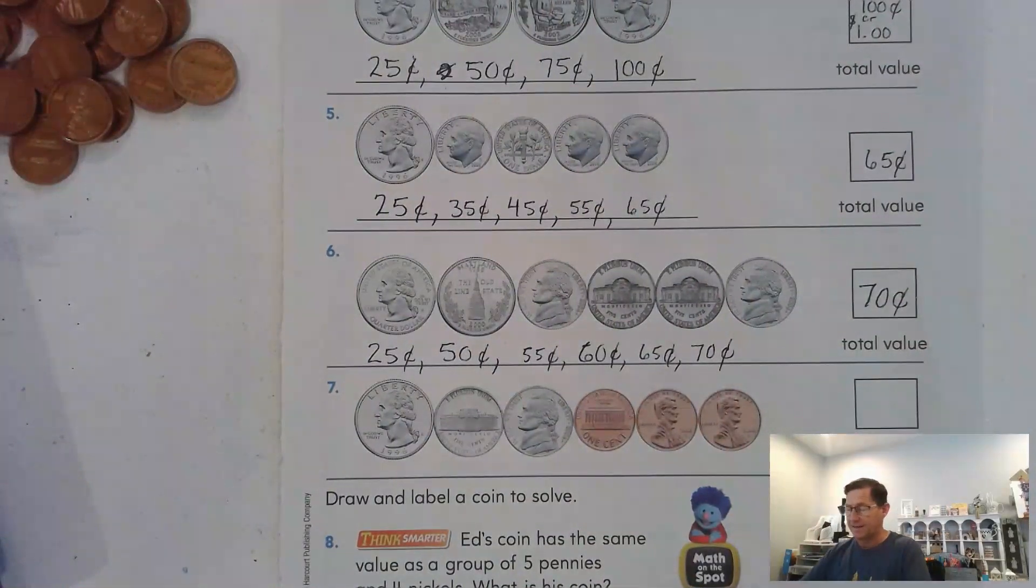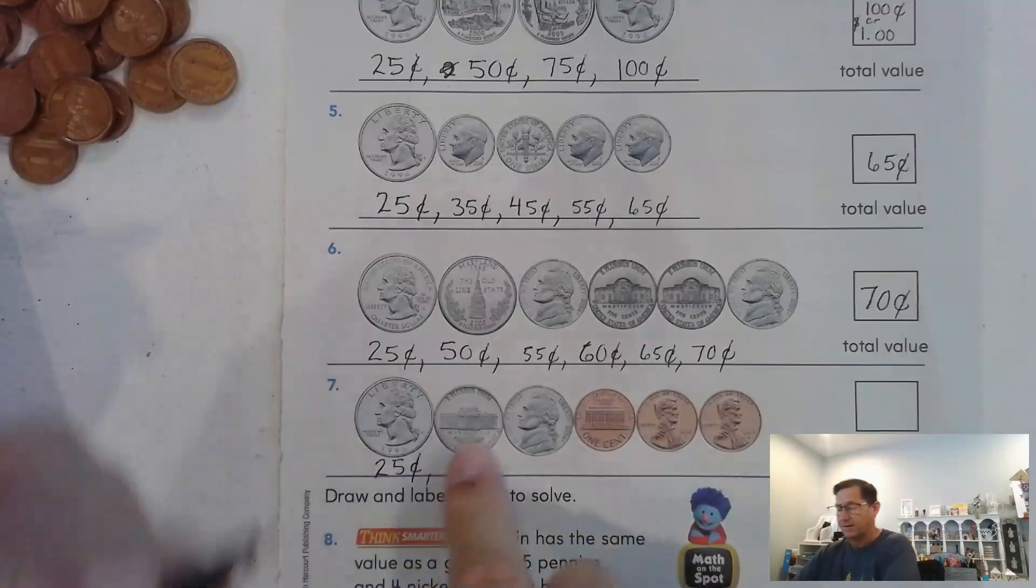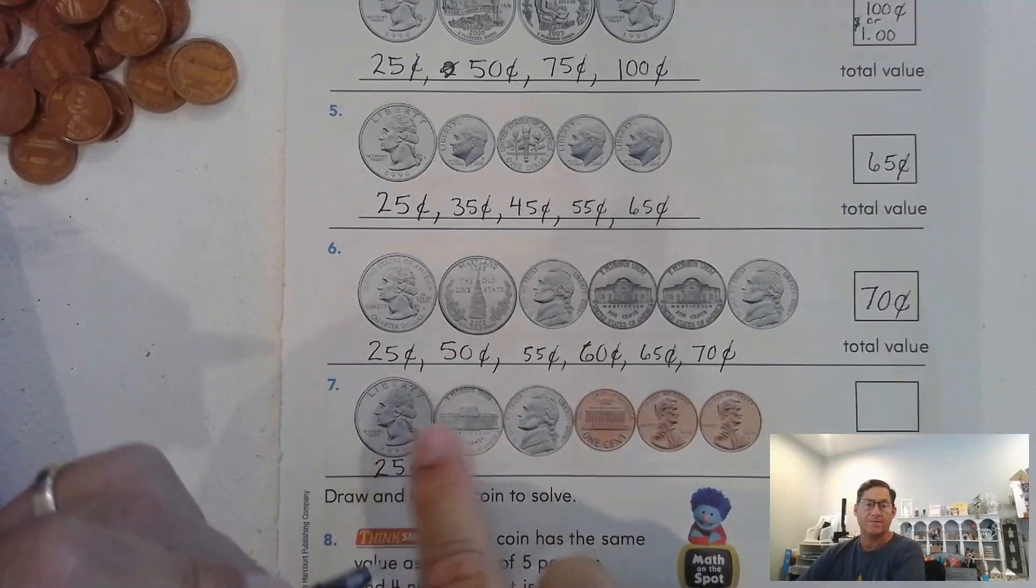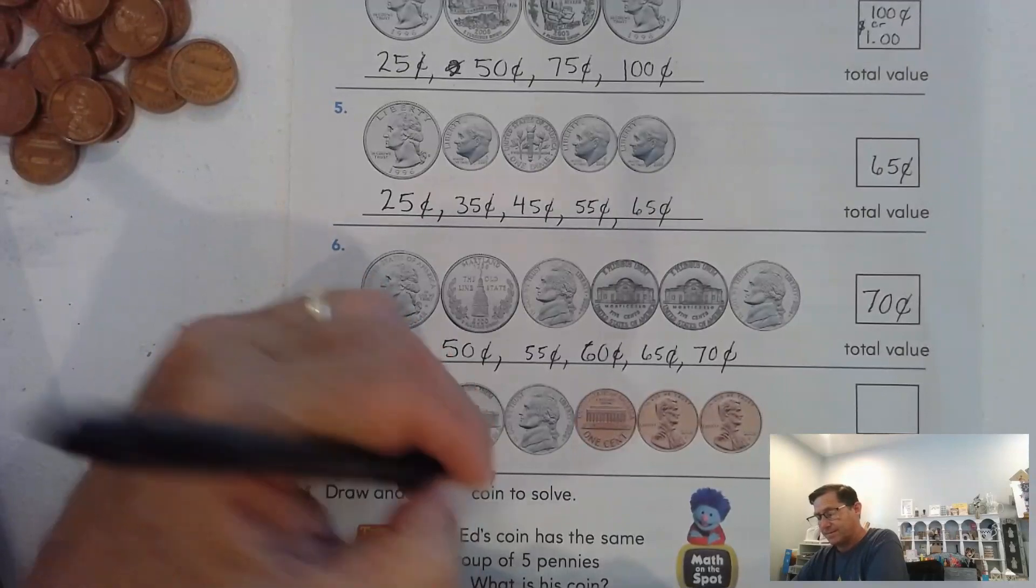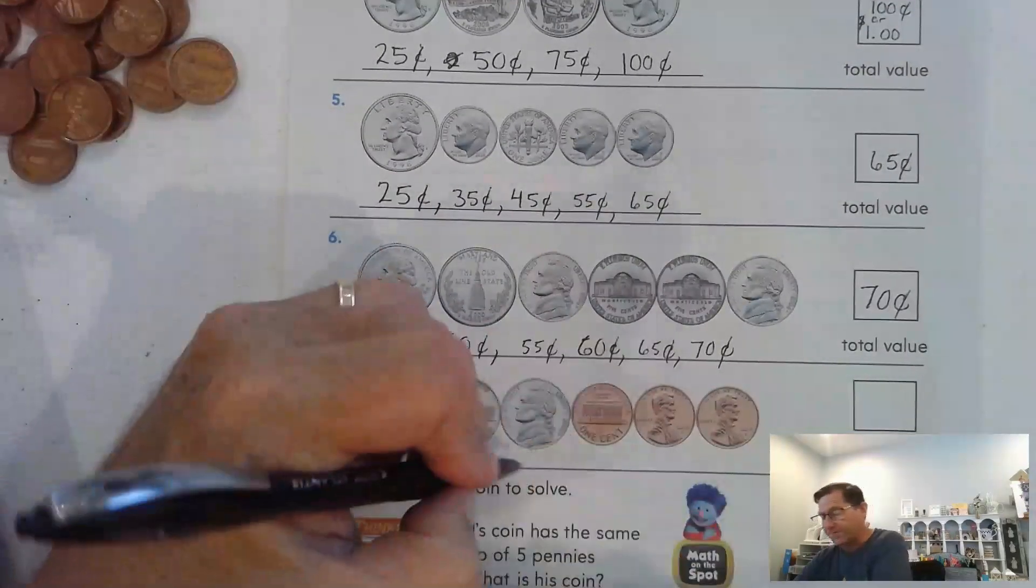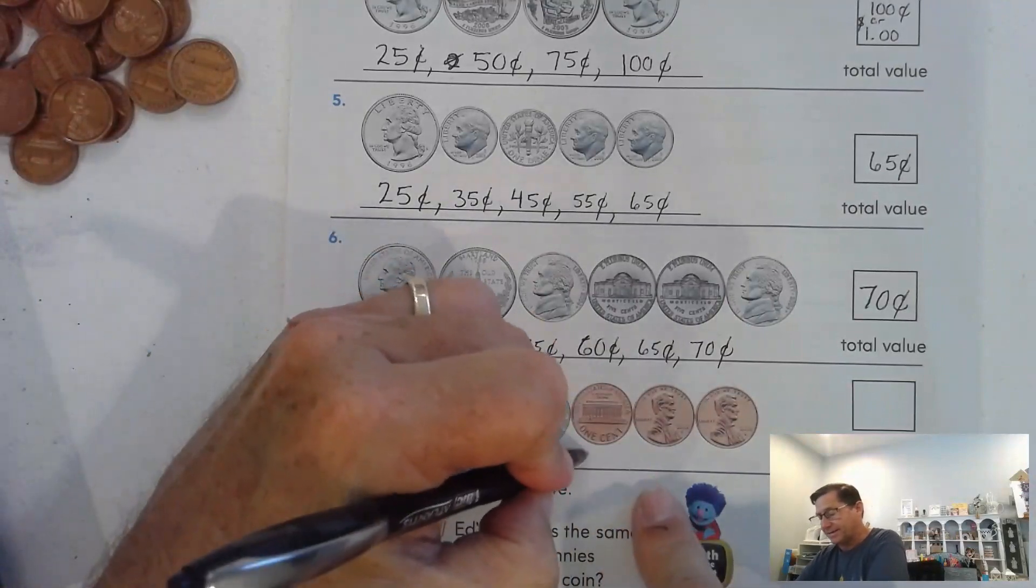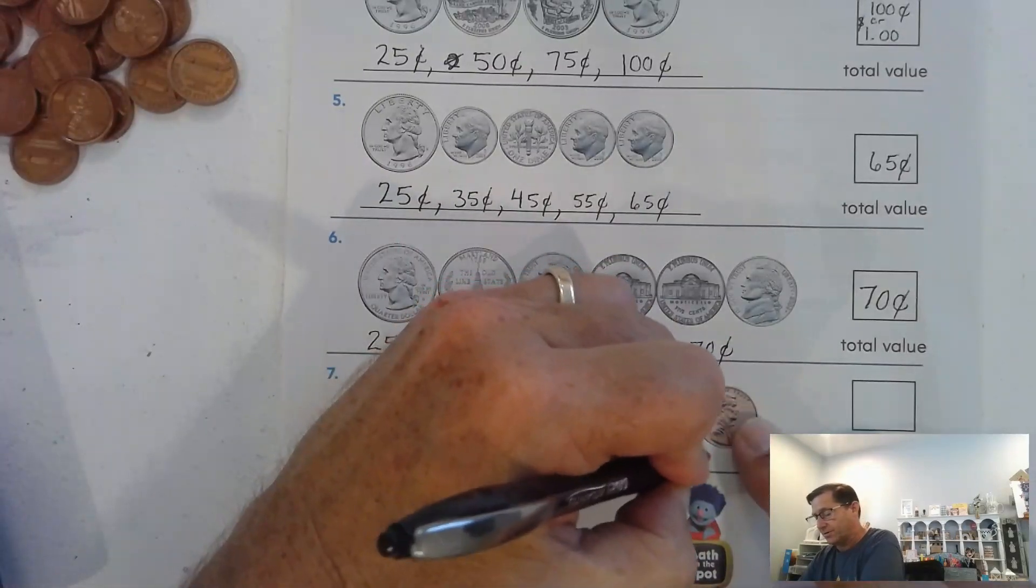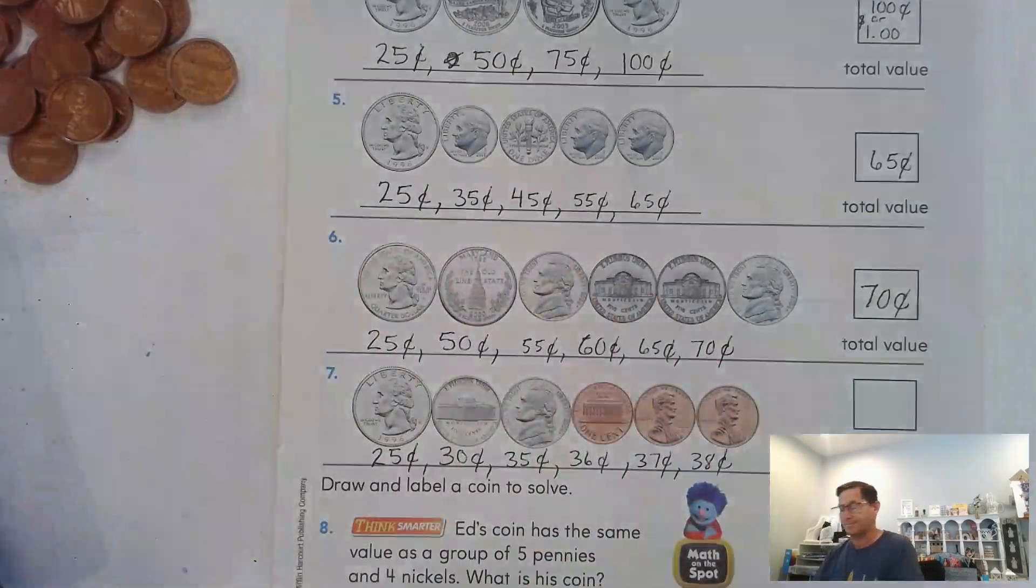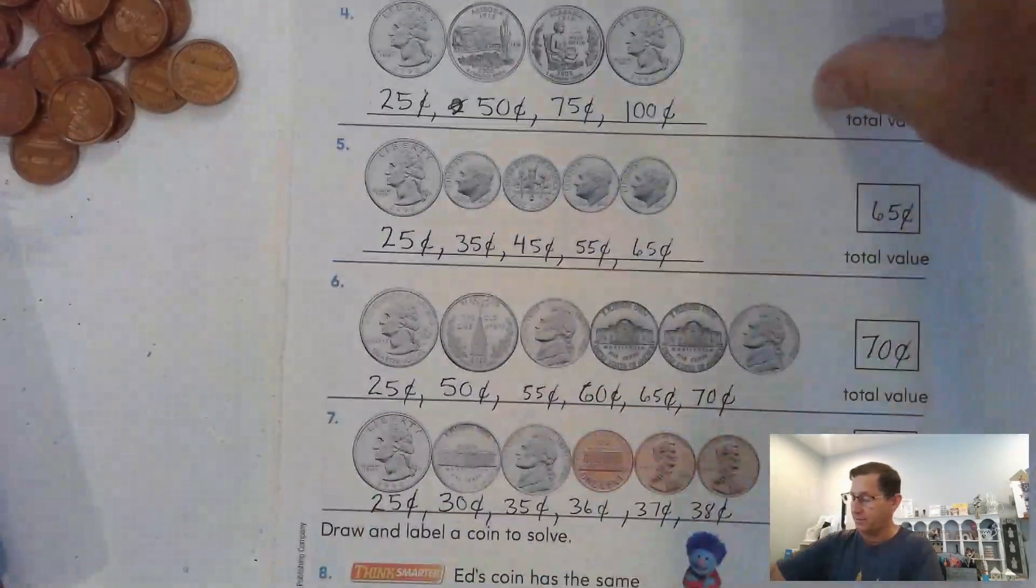Number seven. Again, we have a quarter, so we're going to start with 25 cents. Now we're going to count by fives: 25, 30, 35. Then 36, 37, 38. So 38 cents in number seven.